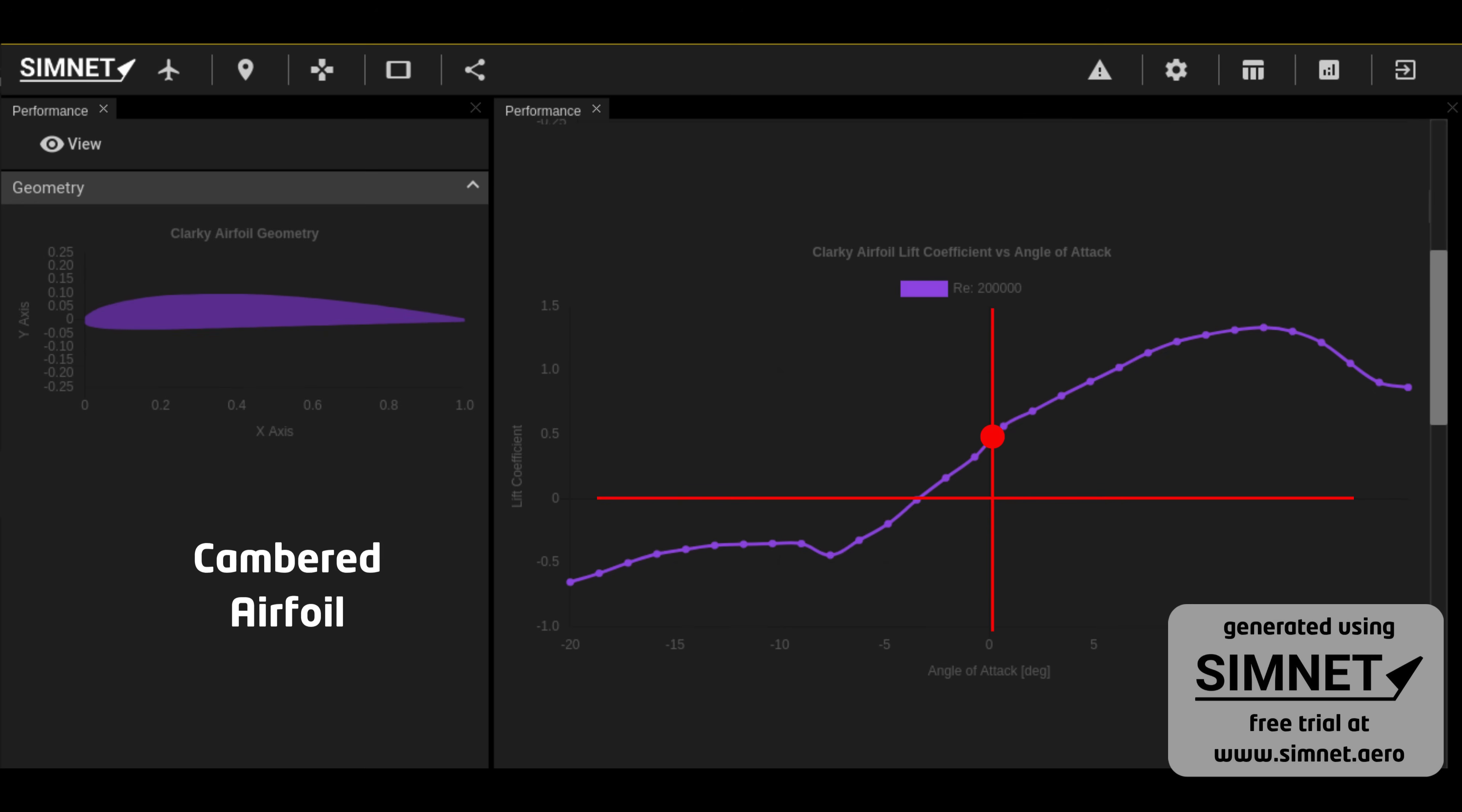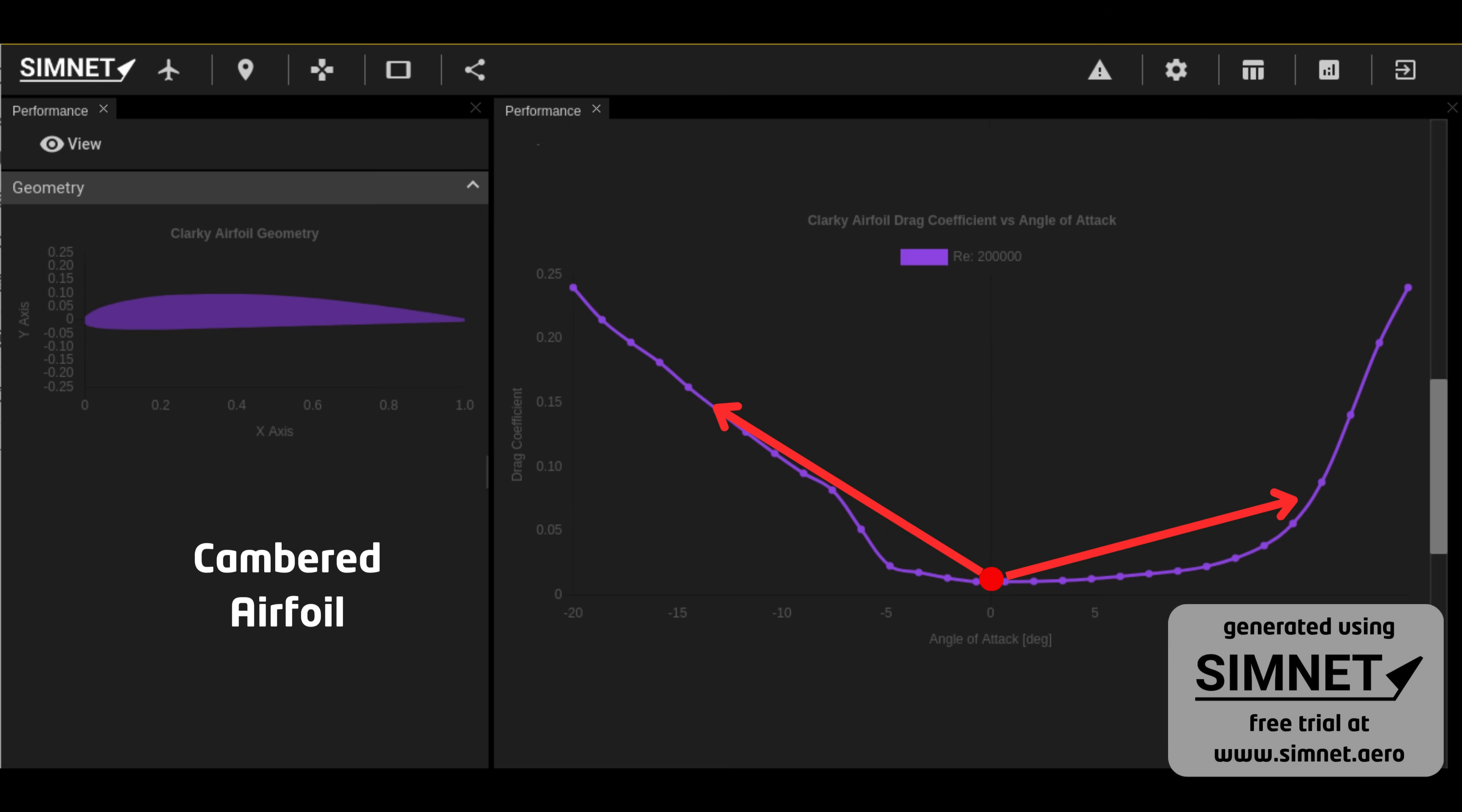This graph shows the relationship between the drag coefficient and angle of attack for a standard cambered airfoil. The drag reaches its lowest point at or close to a zero angle of attack and rises with an increase in the angle of attack in any direction.